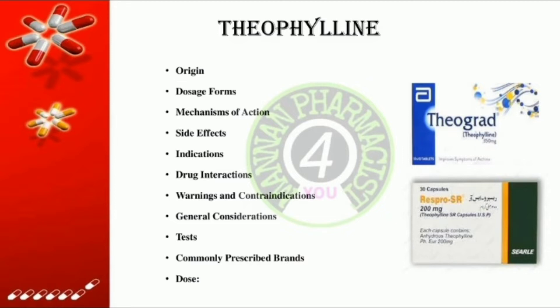Before discussing further, let's know about what the respiratory system and respiratory drugs are. The respiratory system is the organs and other parts of your body involved in breathing, where you exchange oxygen and carbon dioxide. Respiratory system drugs are agents used to relieve, treat, or prevent respiratory diseases such as asthma, chronic bronchitis, chronic obstructive pulmonary disease (COPD), or pneumonia.